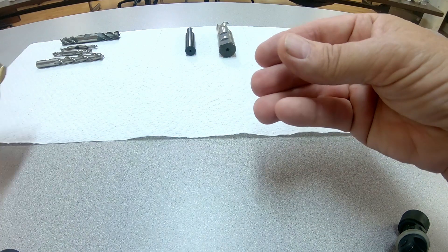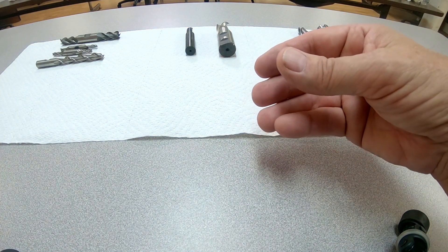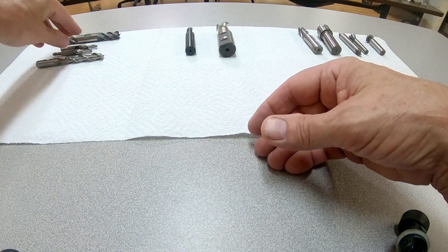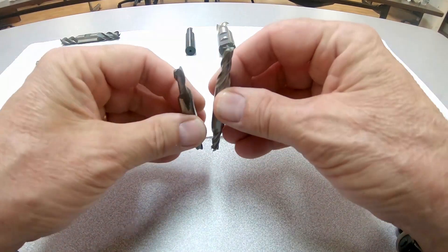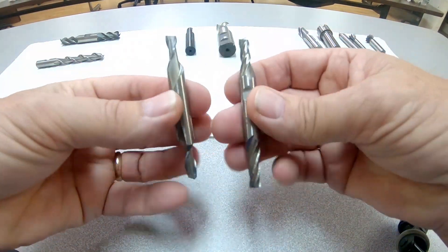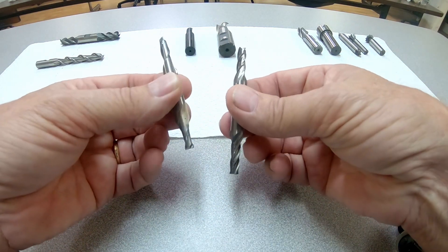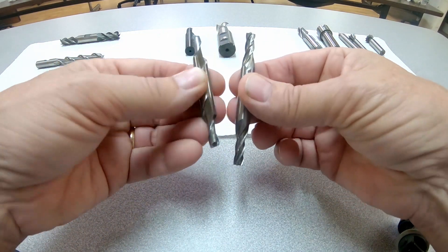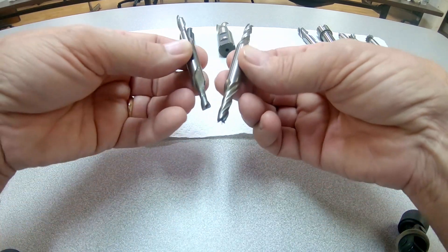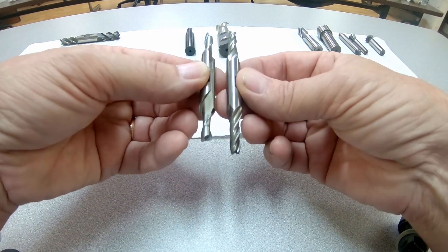Now, you can also get them in the double-ended variety. Here's a couple examples right here. These are both quarter-inch, and you can see they're double-ended, so you get twice the end mills. It is more efficient use of the material.